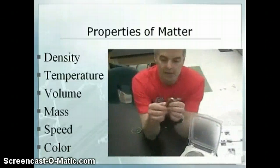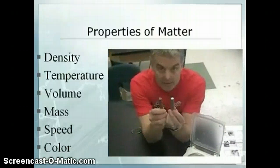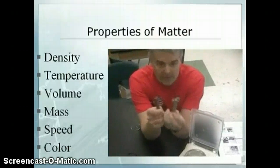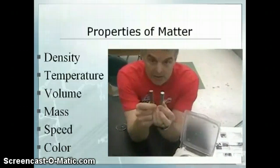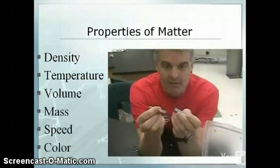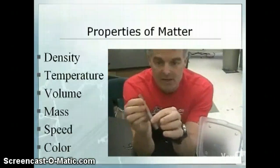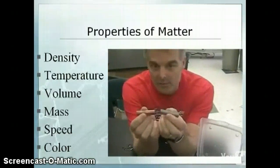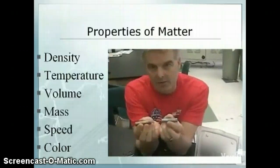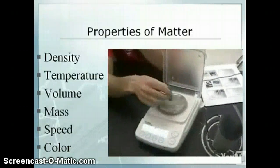What I've got right here is two different metal cylinders. The first one is made of copper, and the second one is aluminum. What would you say about their volume? Looks like the volumes are about the same — they're the same size in terms of volume, but if I hold them, one thing I can notice is that one is much heavier. So I'm going to show you that on the scale.